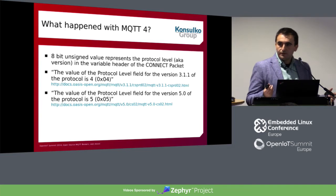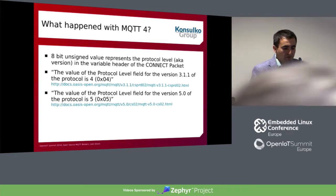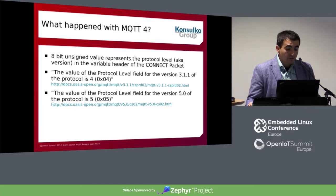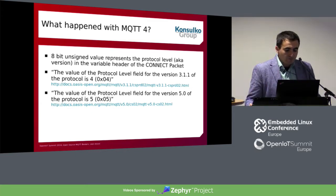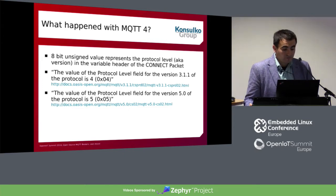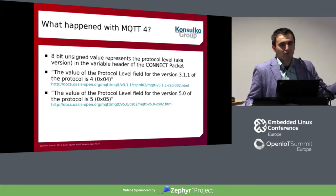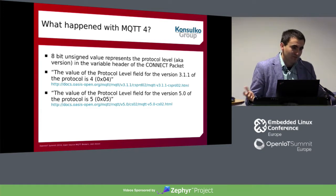Some of you are probably wondering what happened with MQTT 4. If we look at the specification, there is an 8-bit unsigned value representing the protocol level in the variable header of the connect packet. The value for version 3.1.1 of the protocol is 4, which is why we jump directly from MQTT 3.1.1 to MQTT 5. The protocol level value for version 5 is obviously 5.